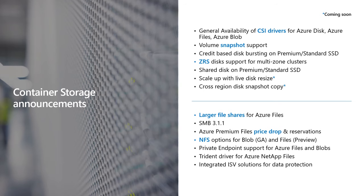In the last one to two months, we've announced a number of key capabilities on container storage. First is the general availability of the CSI drivers for Azure Disk, Azure Files, and Azure Blobs in AKS, including critical functionality like volume snapshots and support for zone-redundant storage. You can also leverage larger file shares with Azure Files and take advantage of the price drop and reservations for Azure Files. We've also announced the general availability of NFS 3.0 on Azure Blobs, as well as the preview of NFS 4.1 on Azure Files.